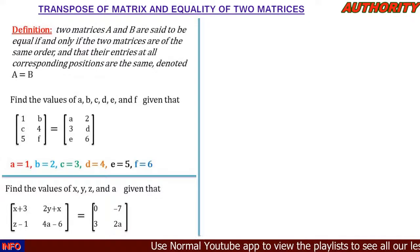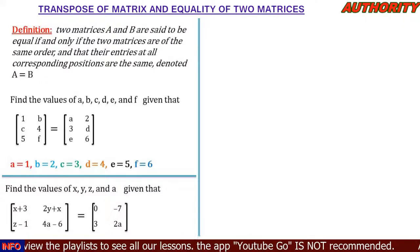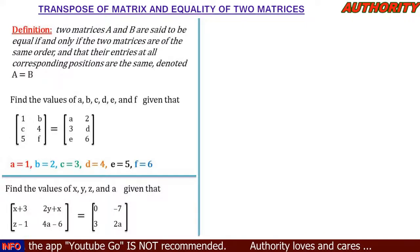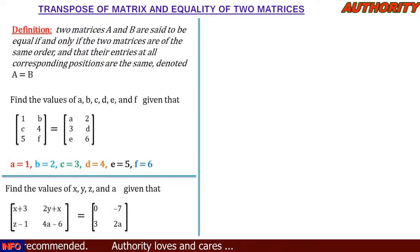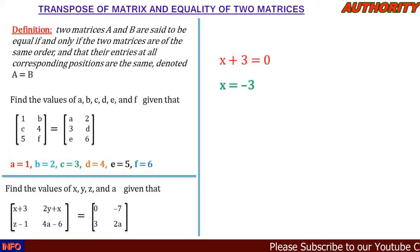Both matrices are 2×2, so the first condition — same order — is met. Their entries at all corresponding positions are equal. c11: x + 3 = 0, so making x the subject, x = -3.